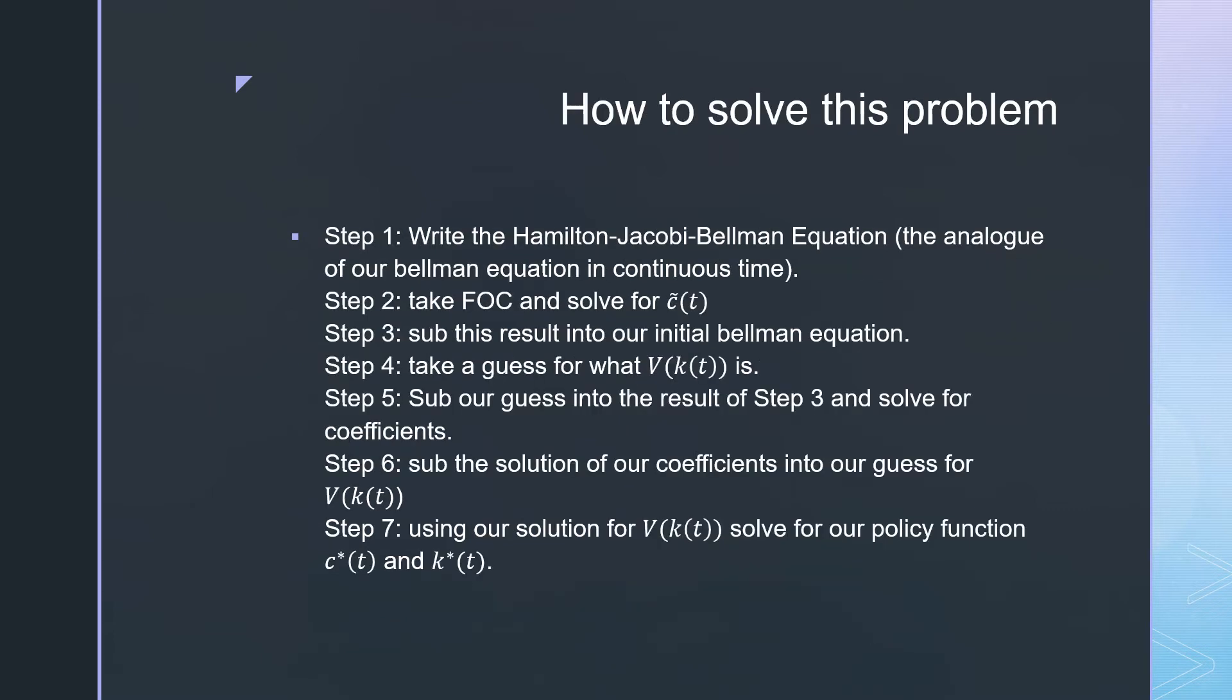To solve this problem, we're going to follow seven steps. Step one: write down our Hamilton-Jacobi-Bellman equation. Step two: take our first order condition and solve for the tentative policy function denoted by c̃(t). Step three: use this result to solve for our initial Bellman equation. Step four: take a guess for what our value function is.